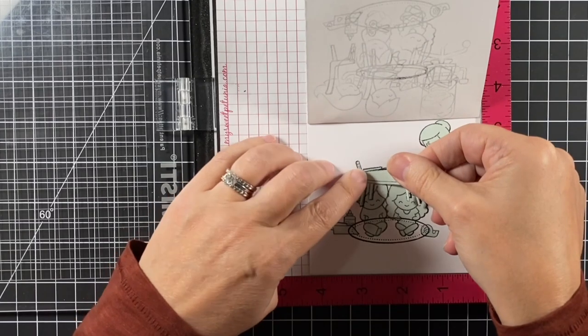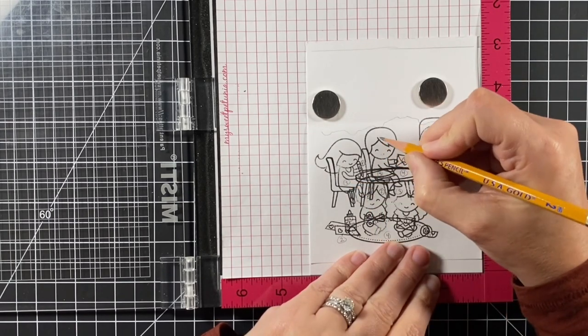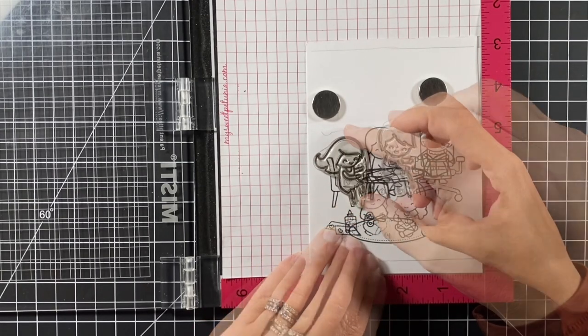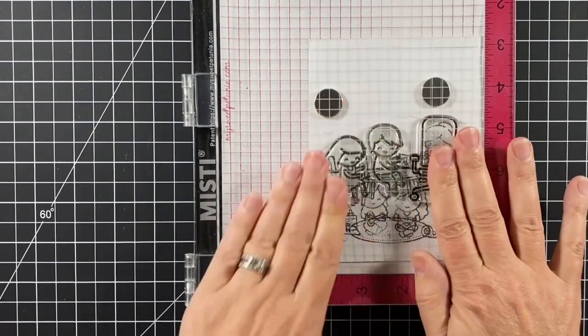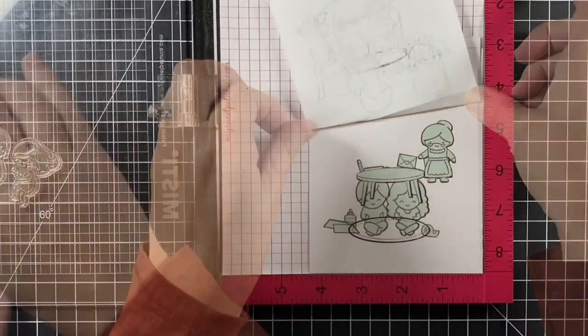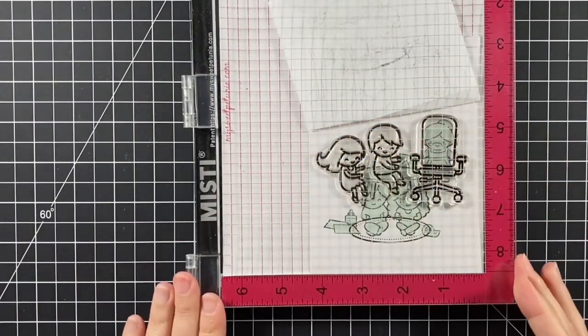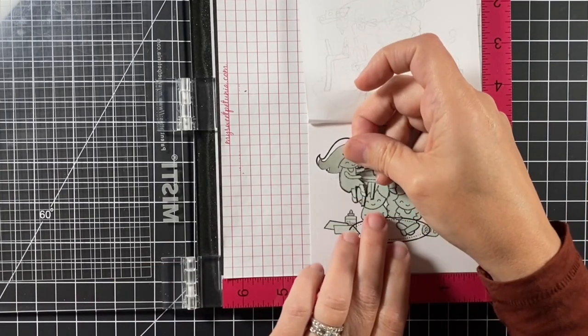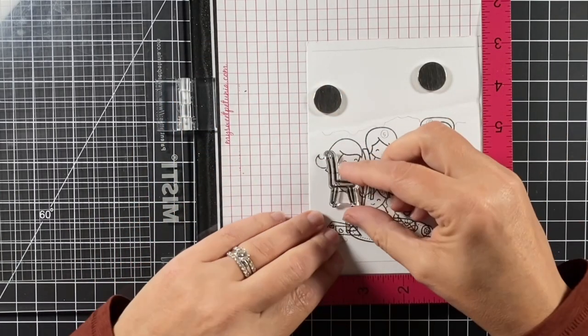Stamp those down and mask them up, and then on to the kids in the background. The chair will be behind the teacher. The teacher's chair is the final layer but there will be chairs that go behind these two kids. I'm going to stamp them one at a time.